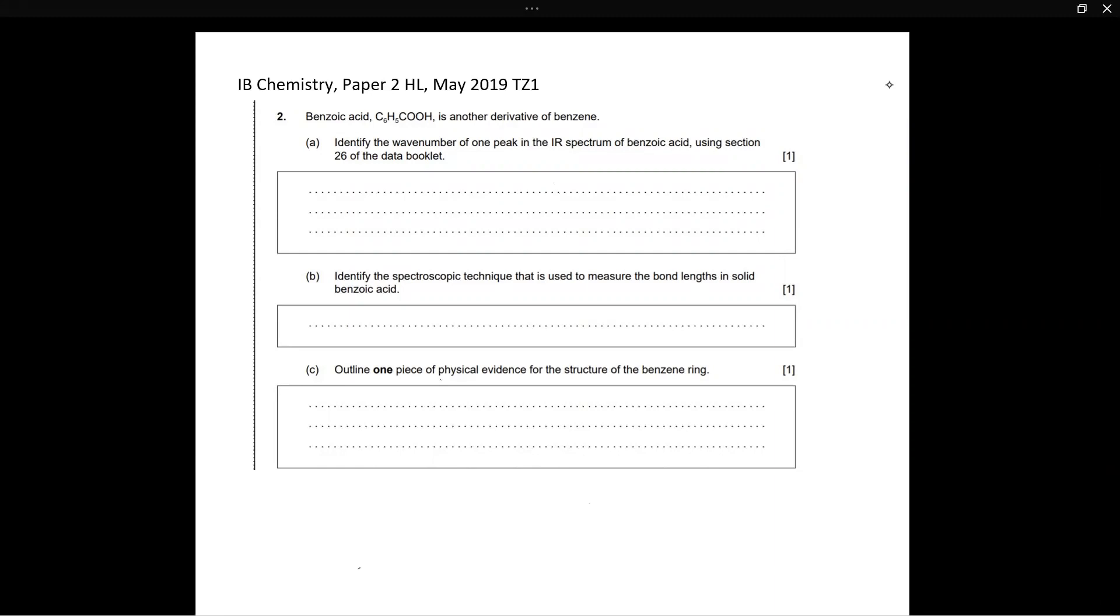Now, what do we use the IR spectrum for? Well, we use the IR spectrum to determine which functional groups are present in an organic compound. If you flip to section 26 of the data booklet, you'll see a lot of numbers, different bonds, the organic molecules, and the wave number at which they're identified.